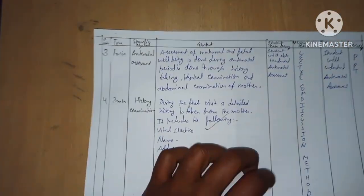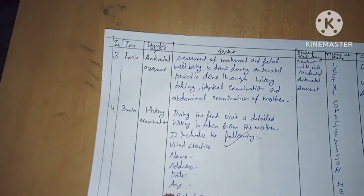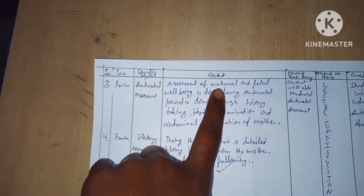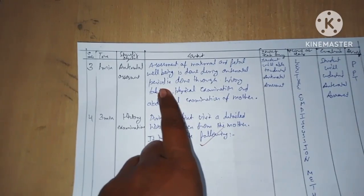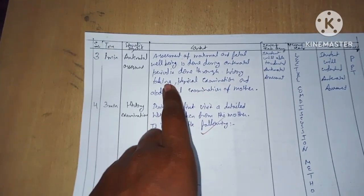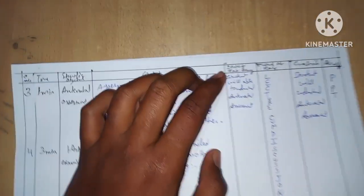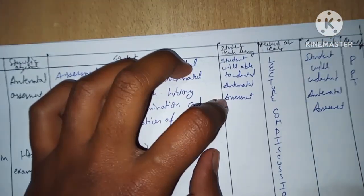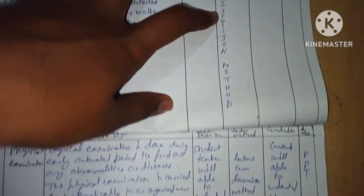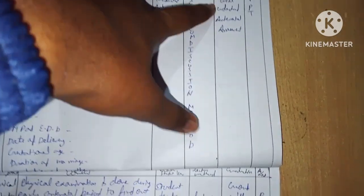Third point — antenatal assessment. Content: assessment of maternal and fetal well-being is done during the antenatal period through history taking, physical examination, and abdominal examination of the mother. Method: lecture cum discussion. Evaluation: students will be able to understand antenatal assessment. AV aids: PPT.